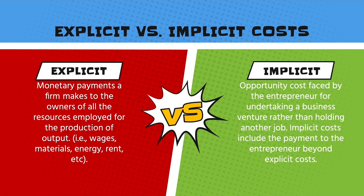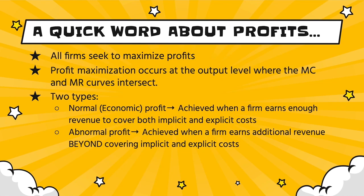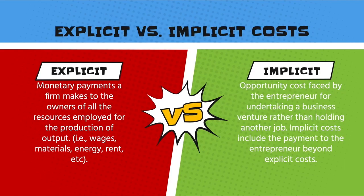Even though some firms will not achieve beyond normal or economic profit, please note that because normal economic profit includes implicit costs, the entrepreneur is still making money. Workers in the company are still getting paid — they're just not making additional profit beyond that.